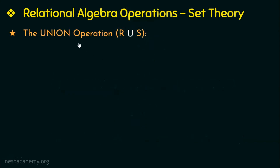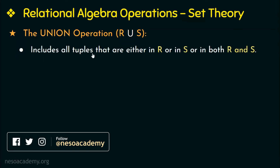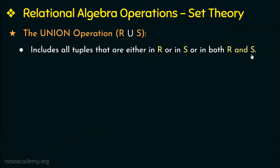Let us see the first type of relational algebra operation: the union operation, denoted by R union S where R and S are two relations. If I have two relations R and S, then a union of these two relations would be a relation that includes all tuples that are either in R or in S or in both R and S. The resulting relation would have tuples present only in R, only in S, or in both. Duplicate tuples will be eliminated.